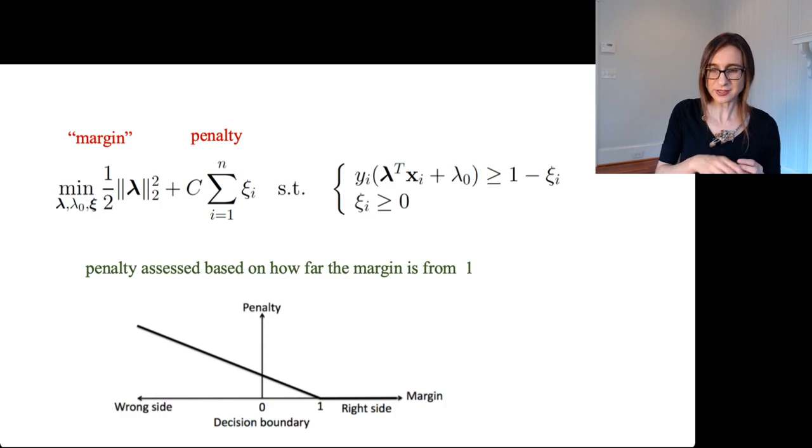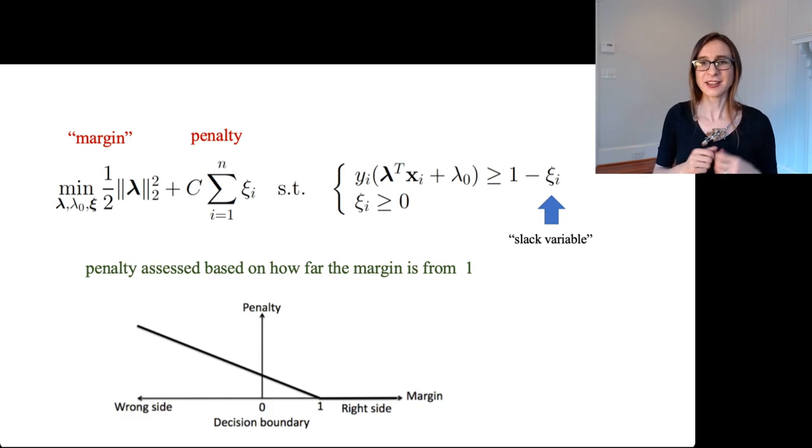Now that interesting symbol there, that's actually a Greek letter xi. And it's also called a slack variable because it says, okay, if you violate the margin conditions, I'm going to pick up the slack. And then it penalizes you for how much slack you pick up, right? How much those conditions are violated.